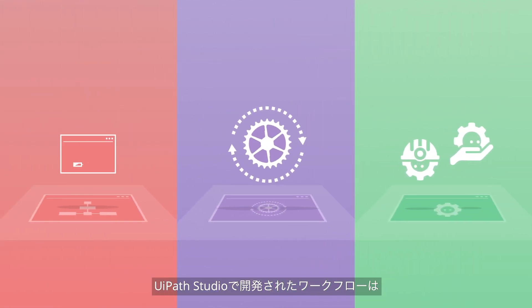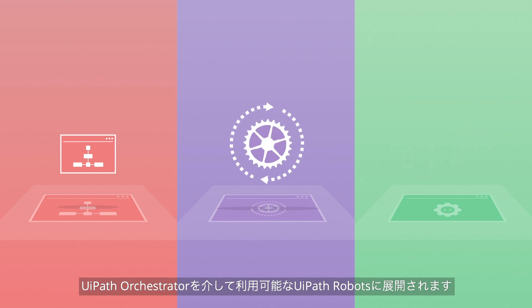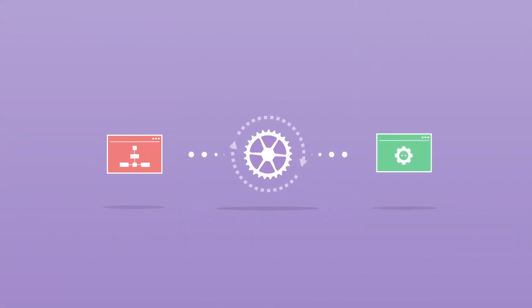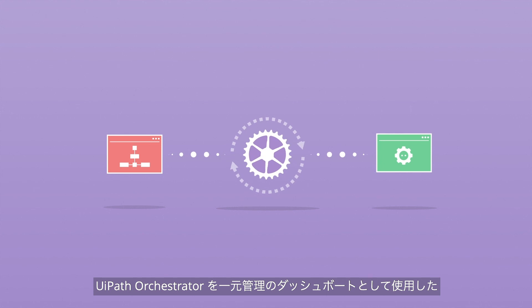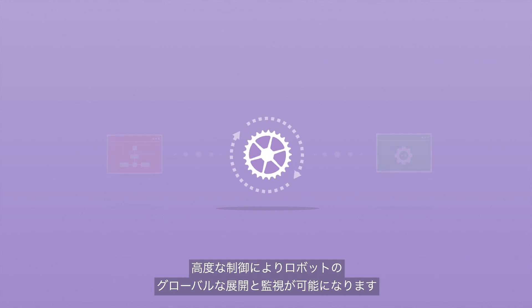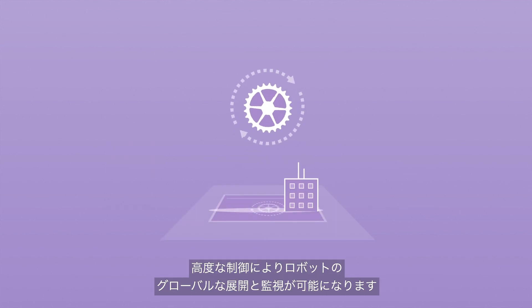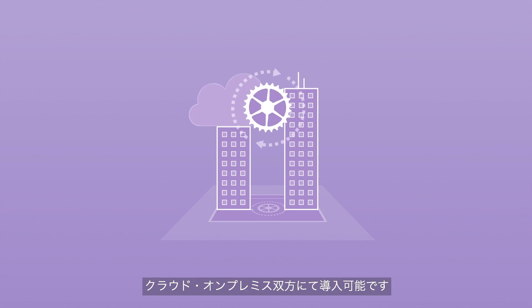Workflows developed in UiPath Studio are deployed to available robots via Orchestrator. As a central dashboard, Orchestrator gives you enhanced control to deploy and monitor your digital workforce globally, both in the cloud and on-premises.